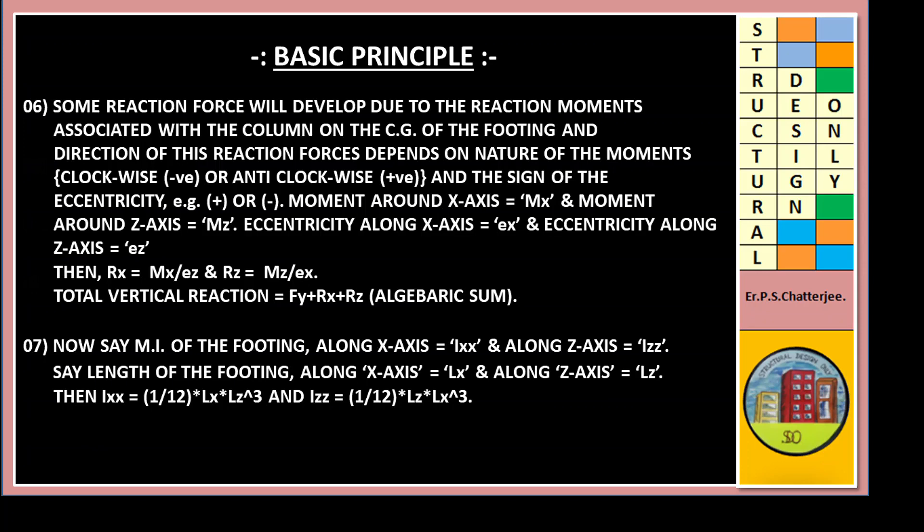Moment around X-axis say MX and moment around Z-axis say MZ. Eccentricity along X-axis EX, eccentricity along Z-axis EZ. Then RX equals MX by EZ and RZ equals MZ by EX. Total vertical reaction FY plus RX plus RZ algebraic sum.